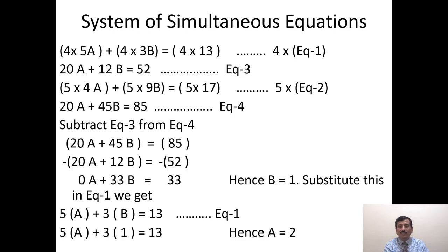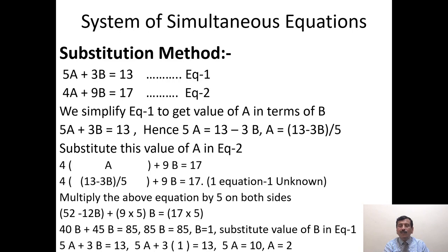The second method is substitution method. Here 5A + 3B = 13 is equation 1, 4A + 9B = 17 is equation 2. We simplify equation 1 to get the value of A in terms of B. 5A + 3B = 13, hence 5A = 13 - 3B, hence A = (13 - 3B)/5. Now we put this value of A in equation 2.